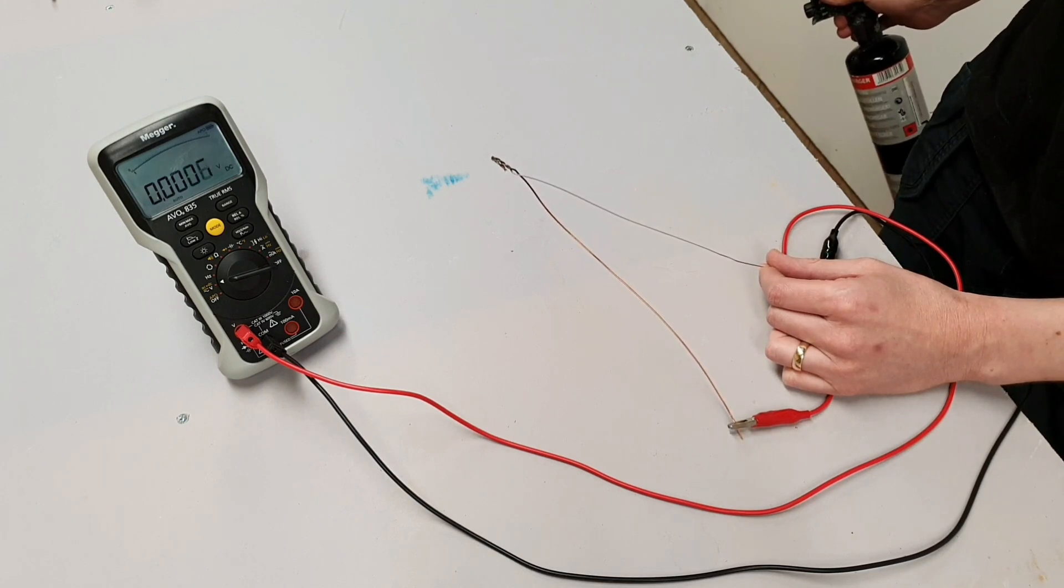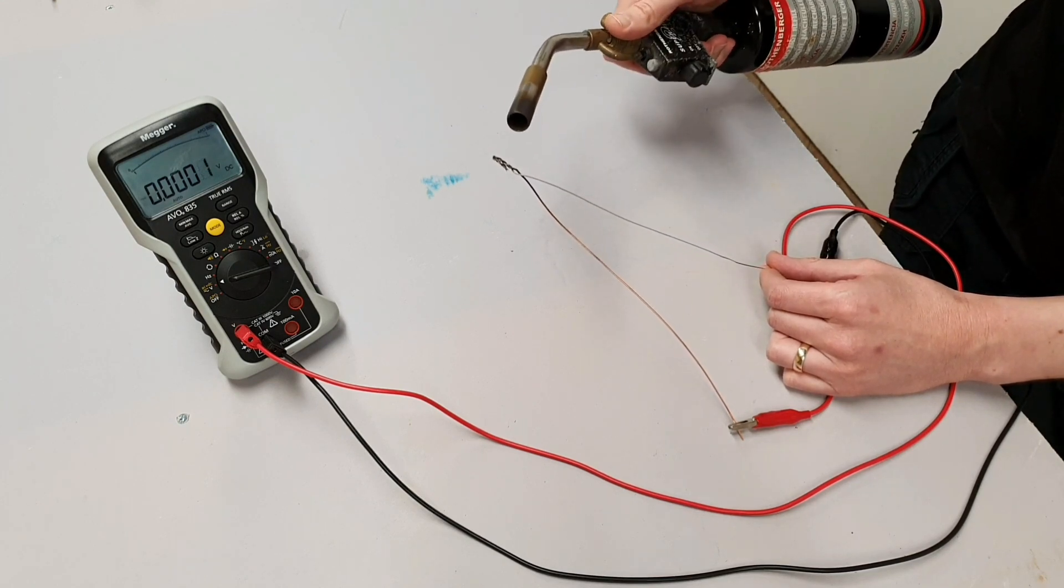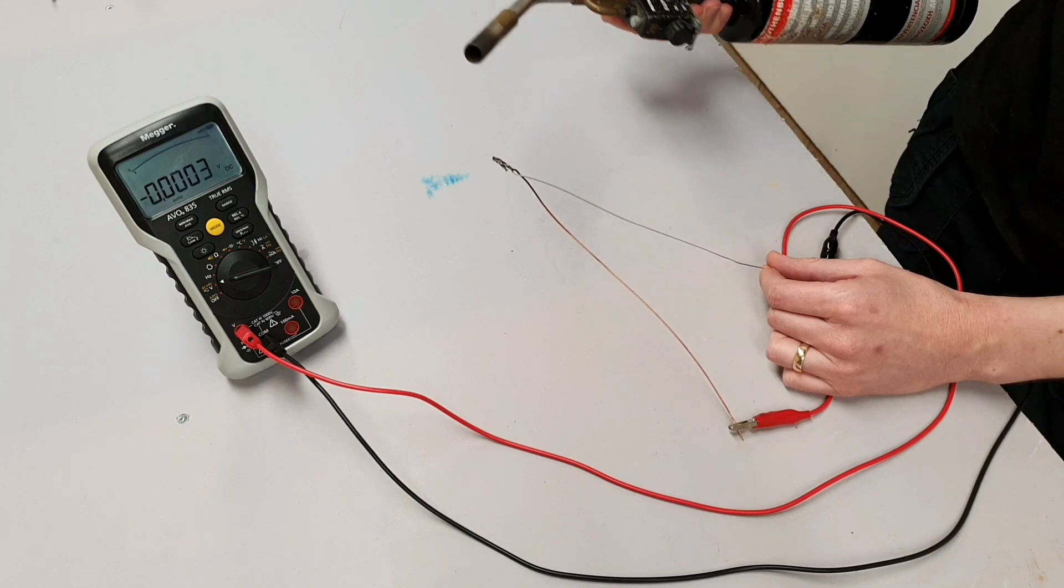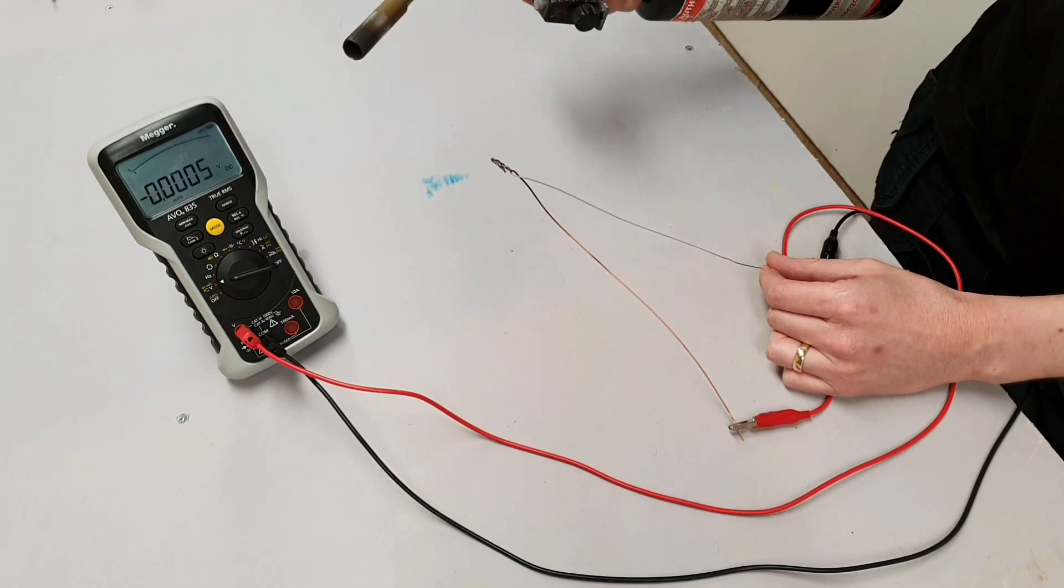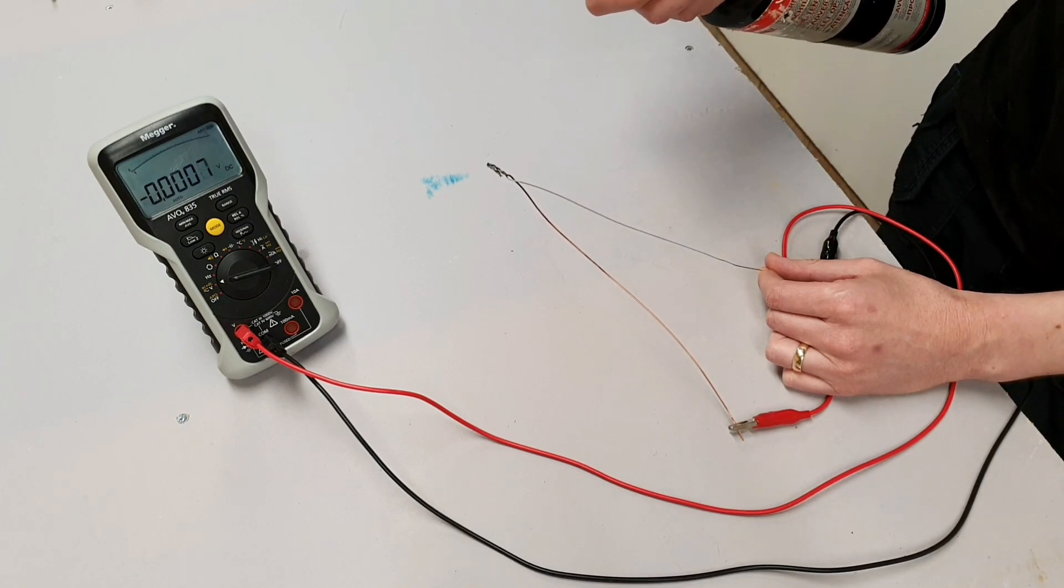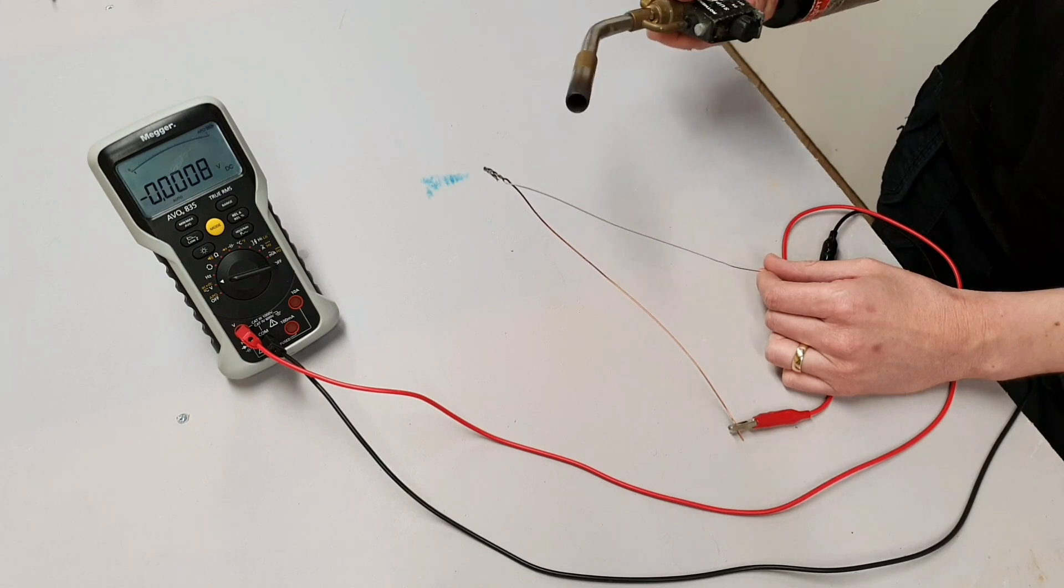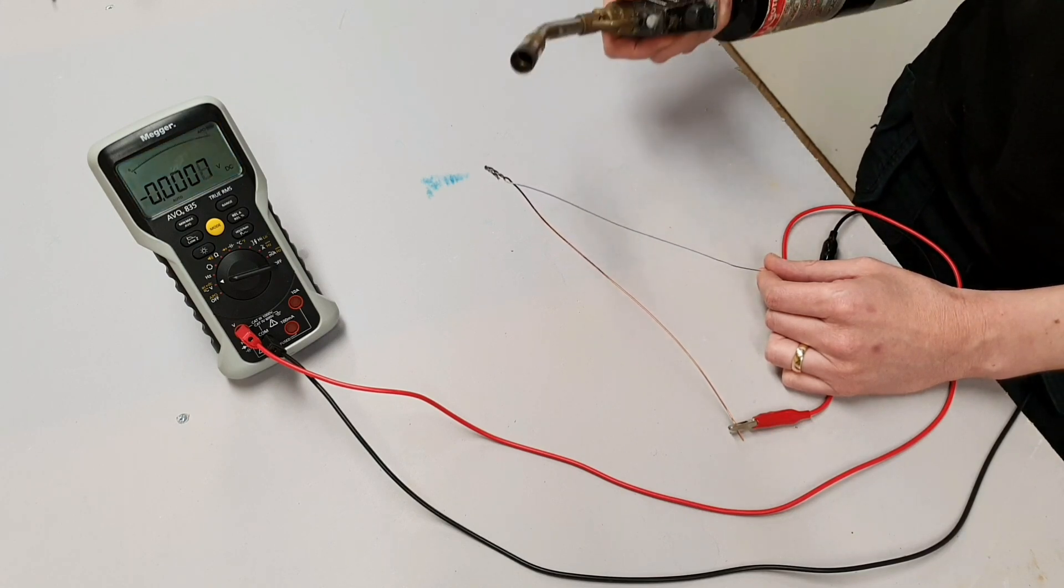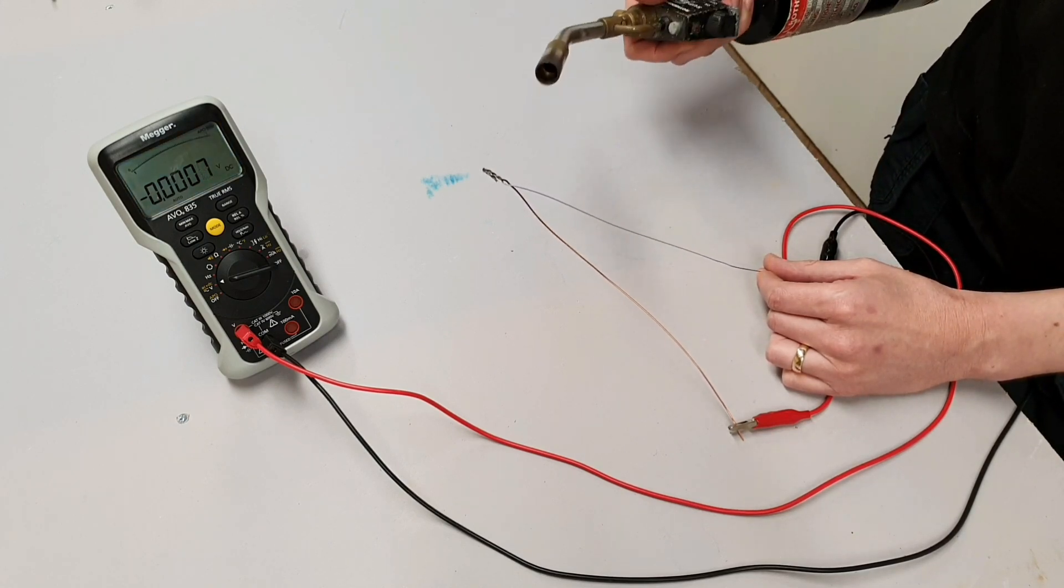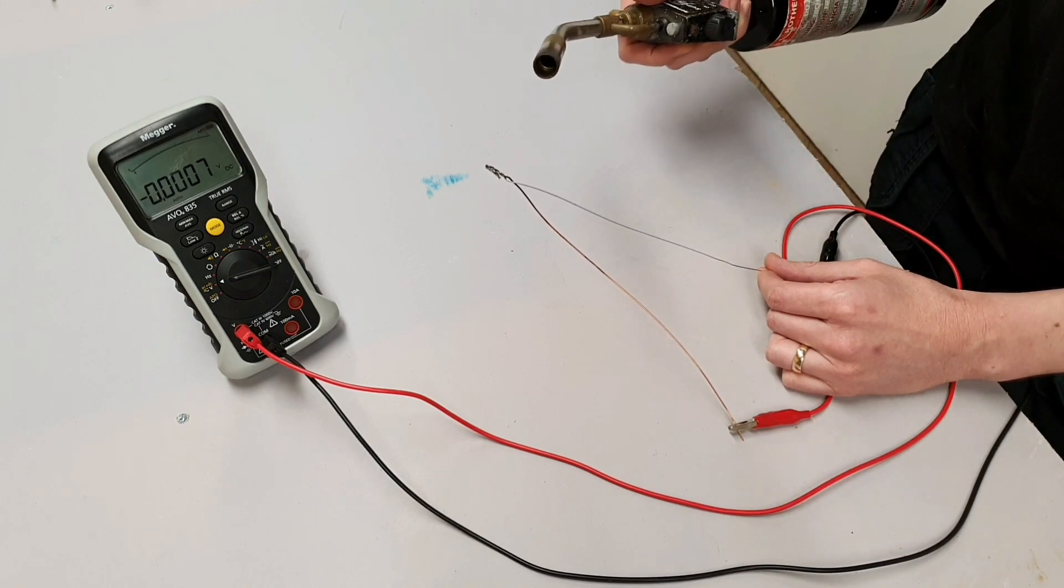We can see there that we've used a heat source to generate electricity, but you'll also notice that what we've produced there was a tiny amount of electricity - just four millivolts using the heat of a blowtorch. As you can imagine, this is not a very efficient way of actually generating electricity. So we don't use the thermal method to generate huge amounts of electricity.